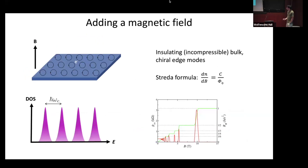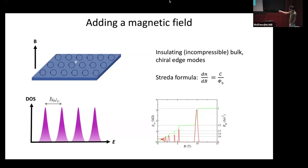That's the zero-field phenomenology. At high magnetic field, twisted bilayer graphene is a two-dimensional electron system. You apply a large magnetic field to reach the quantum Hall regime with Landau levels separated by some cyclotron frequency. When your Fermi level sits between two Landau levels, the bulk is insulating and conduction happens through chiral edge modes, giving dramatic signatures: plateaus in Hall conductivity and zeros in longitudinal conductivity.